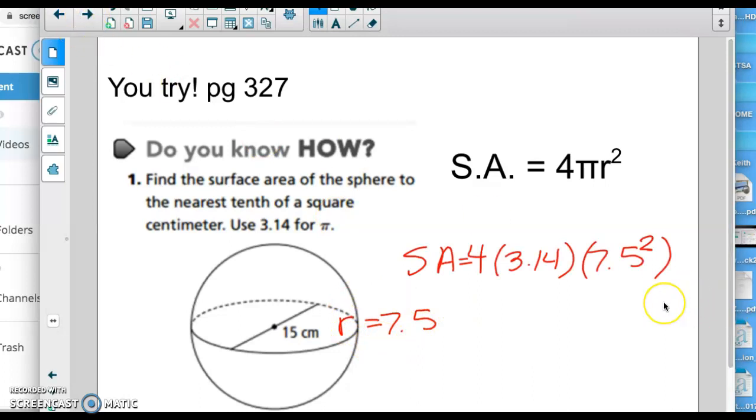You plug everything that you have into your equation. It says use 3.14 for π, so I'm doing it. Radius is not 15, it is 7.5 and I'm still going to square it. I plug in that entire thing into my calculator and I get 706.5 centimeters squared.